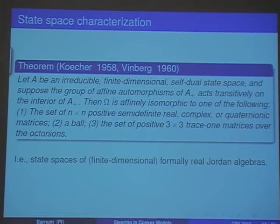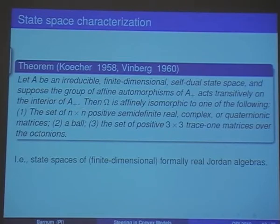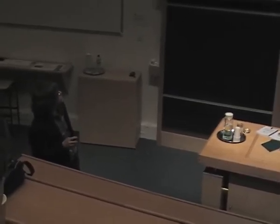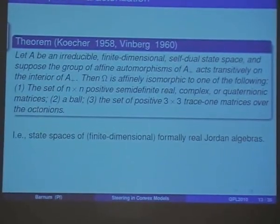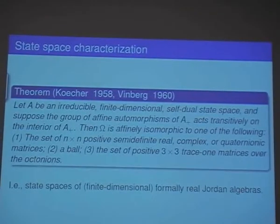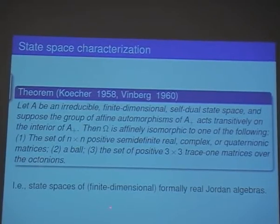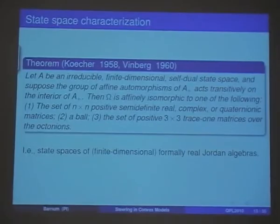There's a theorem which partly motivates this work on steering: if you have a strongly self-dual state space and homogeneity — meaning the group of automorphisms of the cone acts transitively on its interior, so you can take any interior point to any other interior point — then it's basically n-by-n real, complex, or quaternionic quantum mechanics, a ball, or three-by-three octonionic quantum mechanics. So it gets you quite close to quantum theory. These are what are called formally real Jordan algebras, and their classification into those possibilities is due to Jordan, von Neumann, and Wigner.